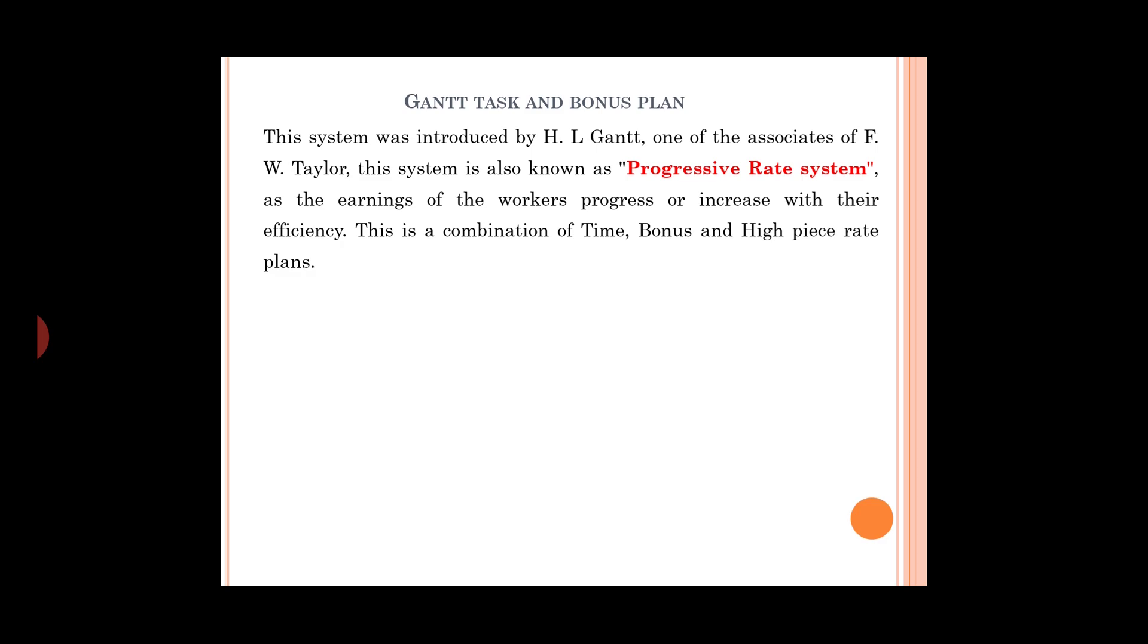This system was introduced by H.L. Gantt, one of the associates of F.W. Taylor. This system is also known as Progressive Rate System, as the earnings of the workers progress or increase with their efficiency. This is a combination of time, bonus, and high pace rate systems.